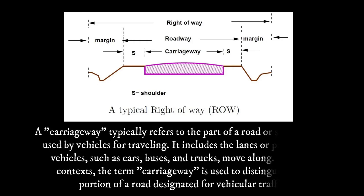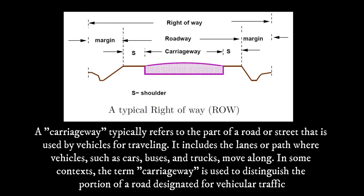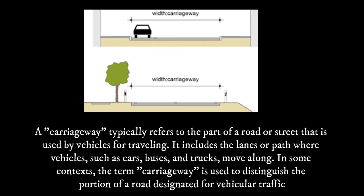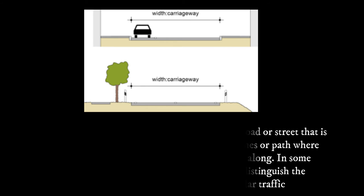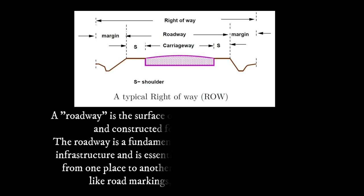Carriageway typically refers to the part of a road or street that is usually used for vehicles for traveling. It includes the lanes or paths where vehicles such as cars, buses, and trucks move along. In some contexts, the term carriageway is used to distinguish the portion of a road designated for vehicle traffic.